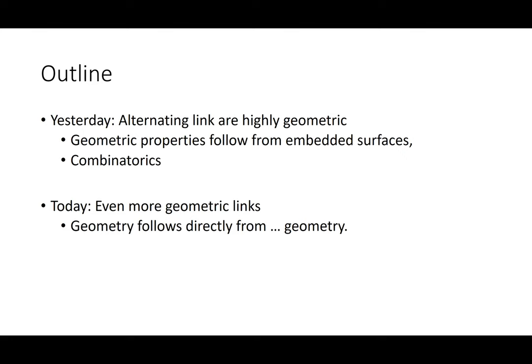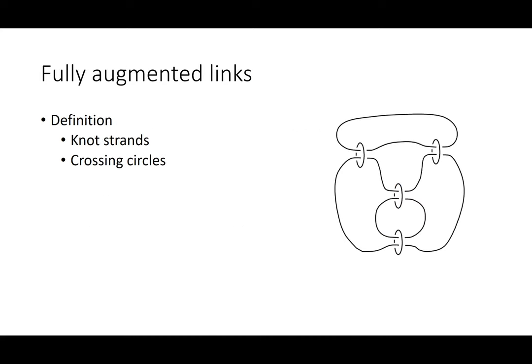Just a reminder to those who were here yesterday: we were looking at alternating knots and the fact that they are highly geometric — they have some really nice hyperbolic geometric properties. The way we proved these is we looked at embedded surfaces in the complements and used the combinatorics of the diagram to rule out particular surfaces. Today I want to talk about my other favorite class of geometric links: fully augmented links.